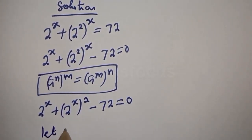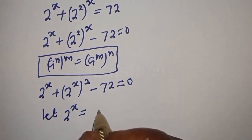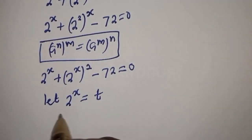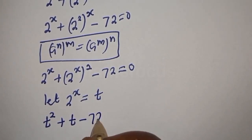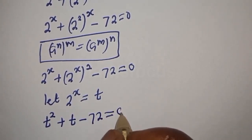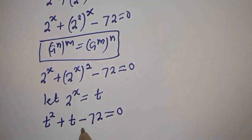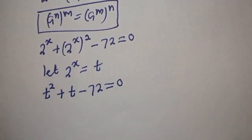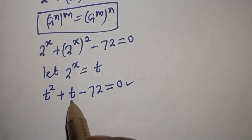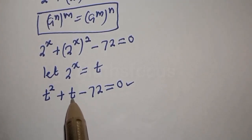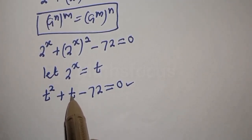This gives us 2 raised to power s plus 2 raised to power s, squared, minus 72 is equal to 0. Let 2 raised to power s equal t. Then t squared plus t minus 72 is equal to 0. This is a quadratic equation which can be solved using the factorization method. In factorization, the product must equal minus 72 and the sum must equal 1, which is the coefficient of t.